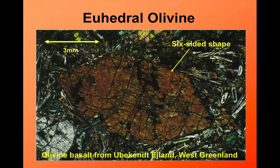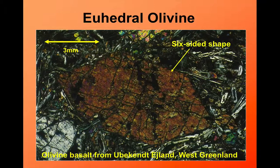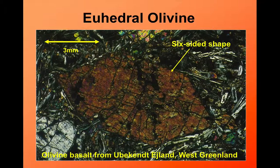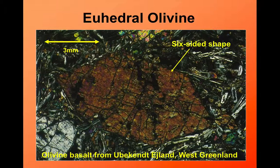Euhedral crystals form when the crystal can grow without being constrained by other crystals around it. So they tend to be coarse. They tend to be some of the early-formed minerals, perhaps growing still in liquid magma.